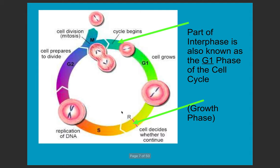There are three phases of interphase. The first is called the G1 phase, or growth one phase, of the cell cycle. This is just normal growth — when the cell is carrying out all of its functions and doing the jobs that it has in the body, or inside of the plant or whatever organism it's in. So this is simply the growth phase.